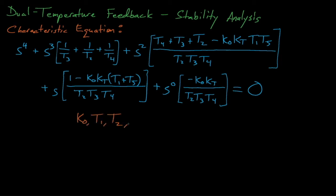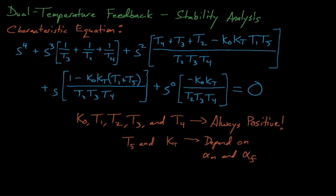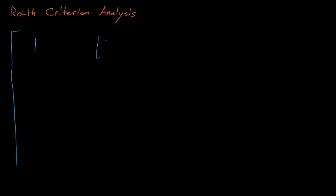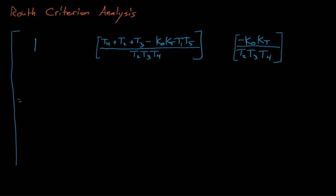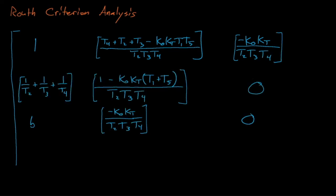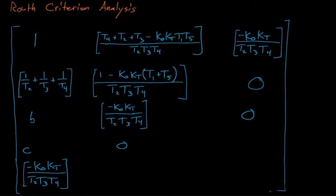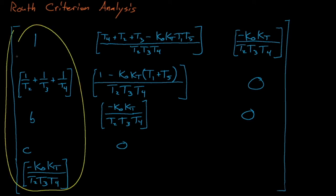K0, t1, t2, t3, and t4 are always positive, which means some terms in the characteristic equation will always be positive. However, the sign of k_t and t5 depends on alpha_f and alpha_m. We'll analyze the stability of our characteristic equation using the Routh criterion, and after some algebraic adventures, we arrive at this Routh matrix. Our system will be stable if all the left-hand-side terms in the Routh matrix are positive.